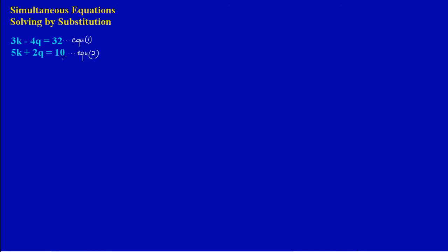Basically what I'll do is choose a variable. In equation one I have K and Q, and in equation two I also have K and Q. I'll choose to make a letter the subject in one of these equations. I'm going to make Q the subject in equation two — that's just my choice, you could choose any other letter.